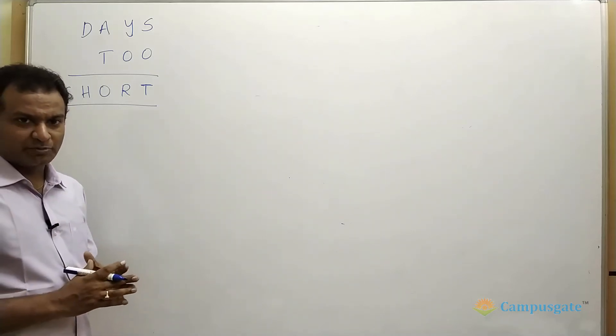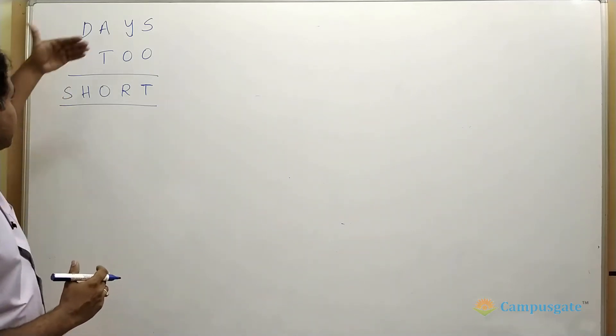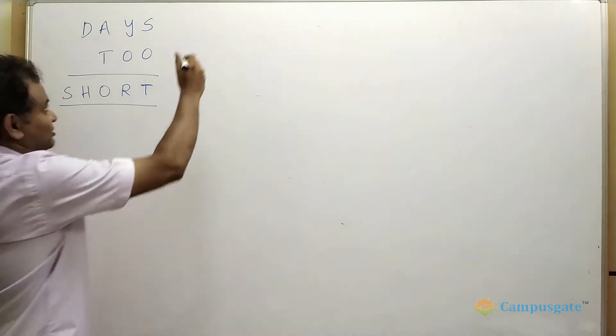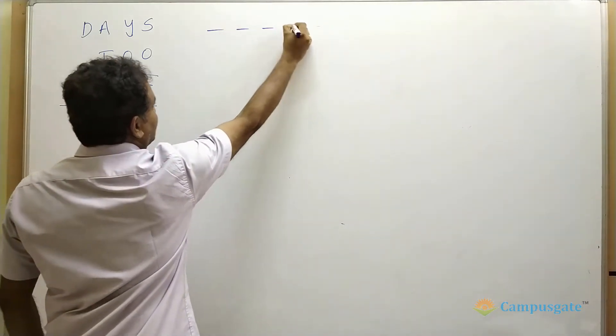Hi, this is a very good alphanumeric question. In this question, DAYS plus TOO equals SHORT. So DAYS TOO SHORT. So let us put our standard template.